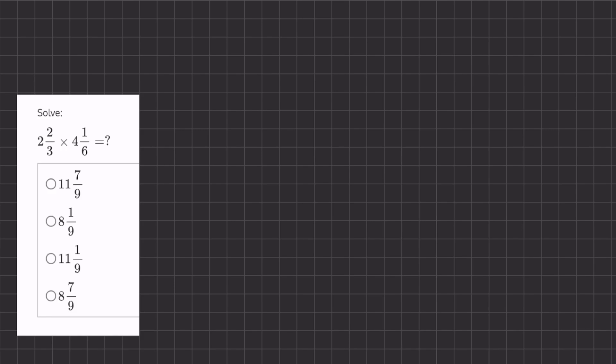All right, so in this problem we are multiplying two fractions that are in mixed number form. In order to multiply these fractions, we will first turn them into improper fractions and then multiply.